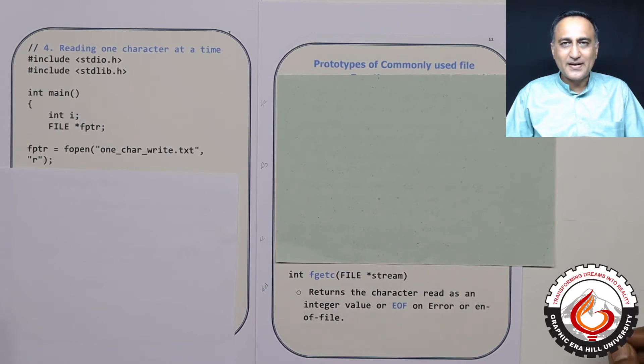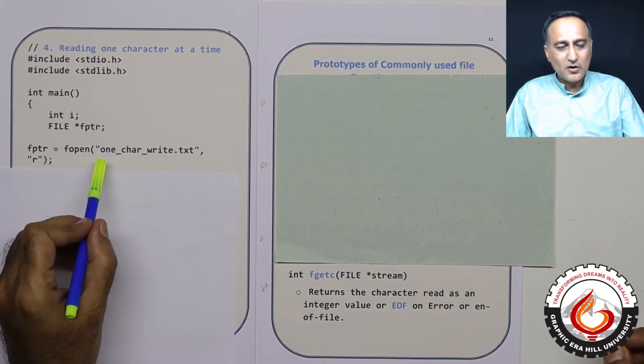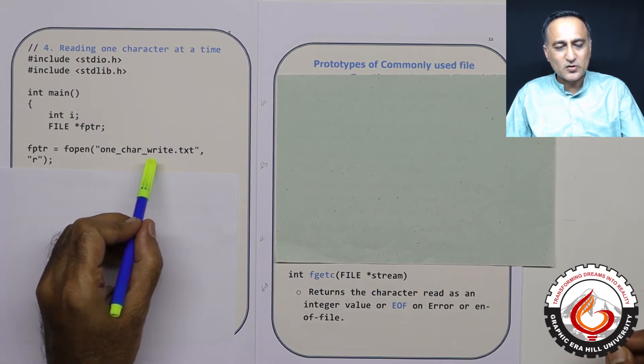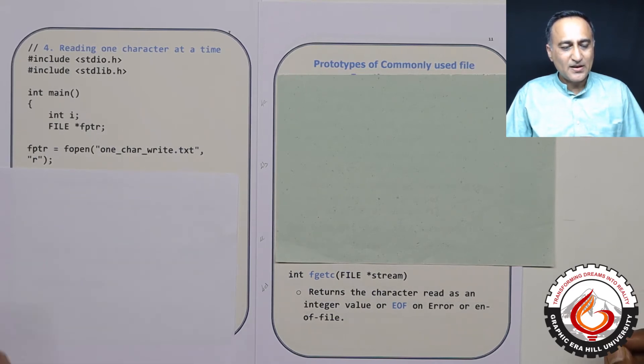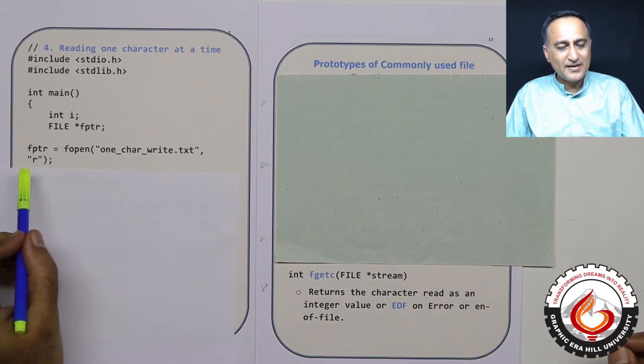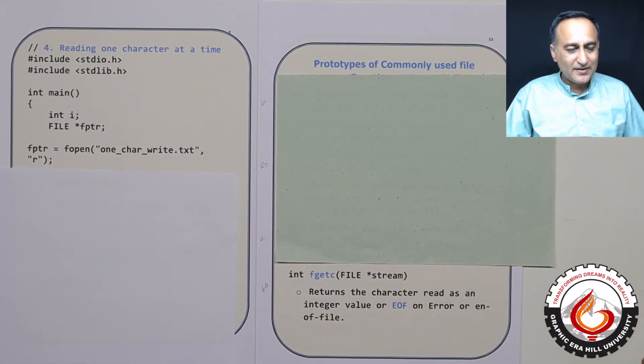If you remember, the name of the file in the previous program was one underscore char underscore write dot txt. The difference is I am opening this file in read mode because I want to read one character at a time.